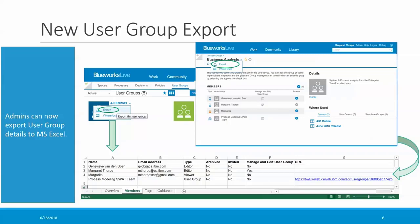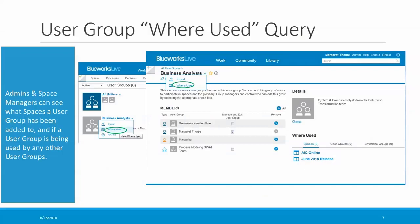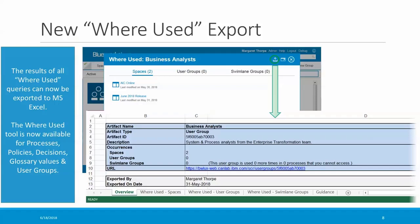We've also made the where use query available for user groups, so admins and space managers can see what spaces a user group has been added to, or whether it's being used by another user group. The where use tool is available both on the user groups page of the library as well as directly from the user group details page. The results of all where use queries can be exported to Excel — just look for the export icon in the upper right-hand corner of the where use report, which you can see here circled in green.